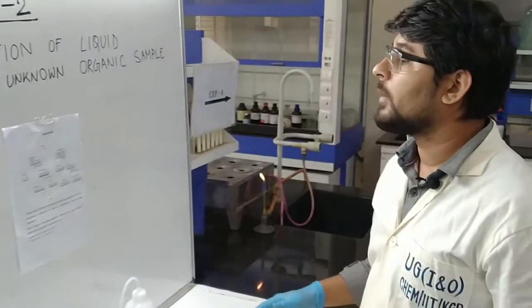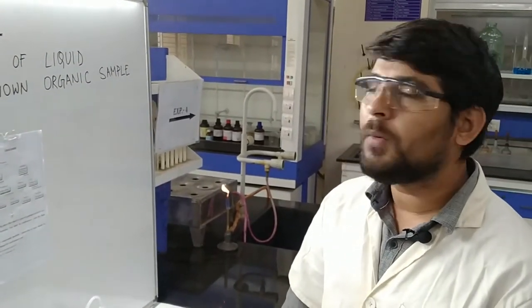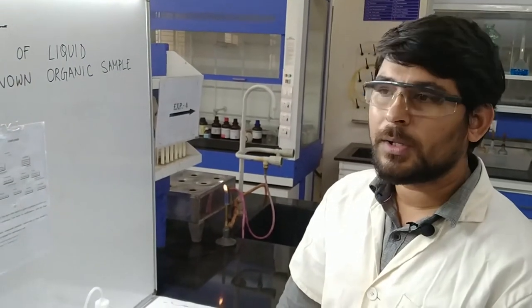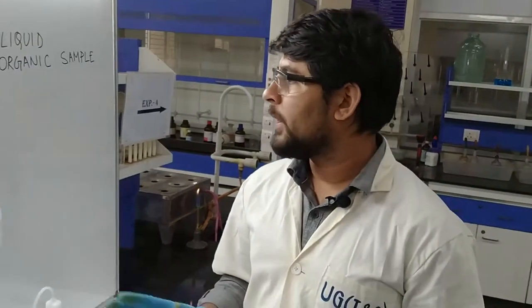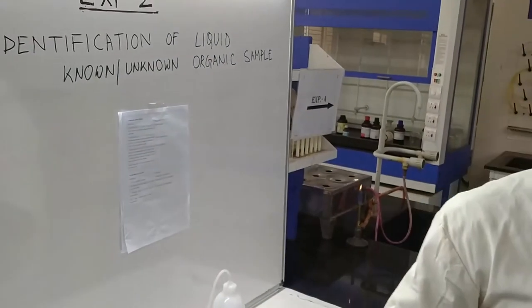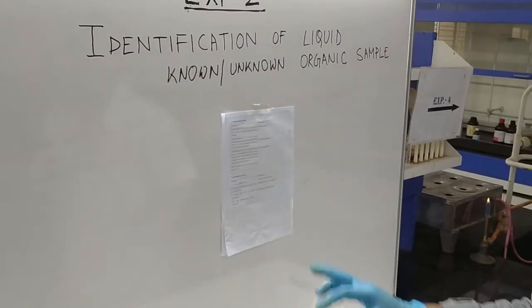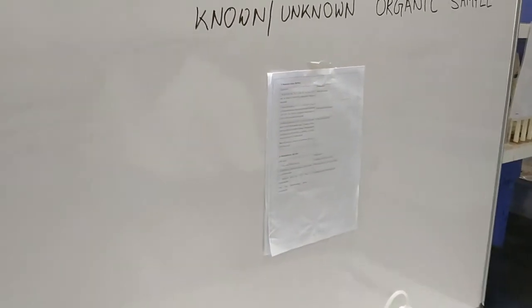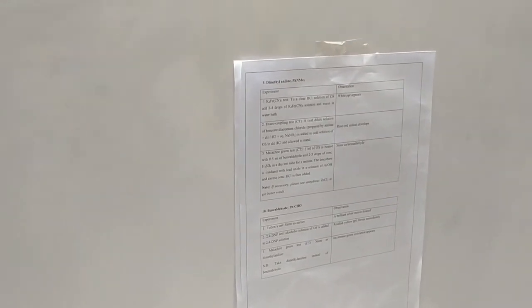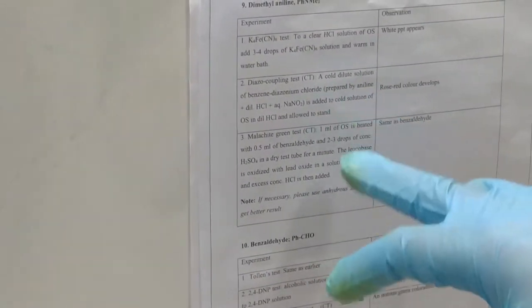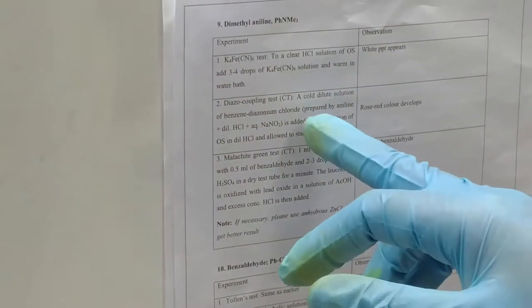All the preliminary tests for our provided sample are now completed. We have to perform the confirmatory test for this dimethyl aniline. The first test in the confirmatory section is the K4 ferrocyanide test, which we already performed in the preliminary section, so we will not repeat it. The second test is the diazo coupling test, which we also performed in the preliminary section, but the confirmatory version is slightly different, so we are going to perform it again.